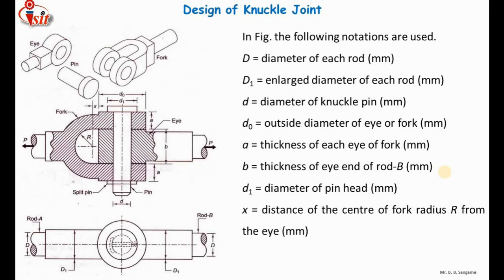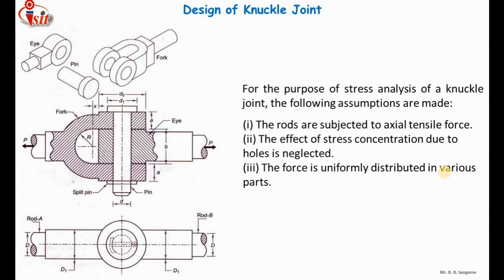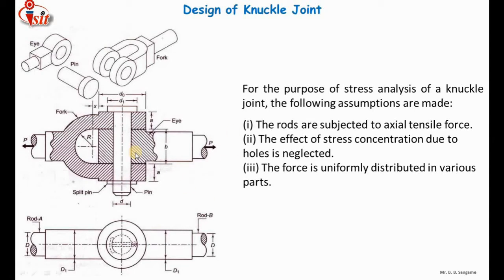Before discussing the design procedure, there are a few assumptions for knuckle joints. First, the rods are subjected to axial tensile force only. Second, we neglect the effect of stress concentration due to the holes in the fork and eye. Third, we assume that the force is uniformly distributed in the various parts. Because of these three assumptions, we select a higher factor of safety of about five while designing the knuckle joint.